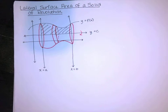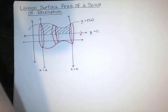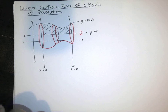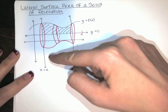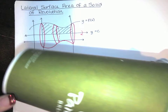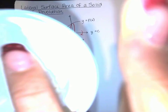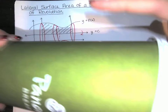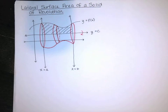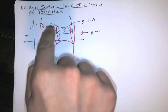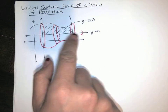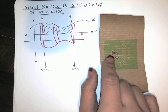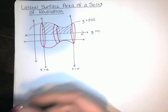The lateral surface area means the surface area of the side of the cup — not the top or the bottom, just the green part. So I need to find the area of those little strips of paper going around the cup, without the end caps.